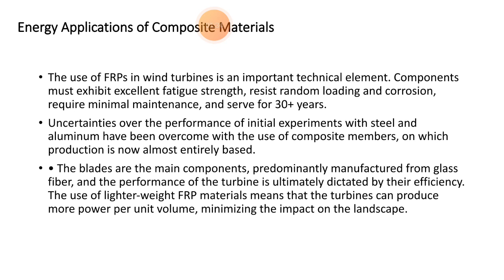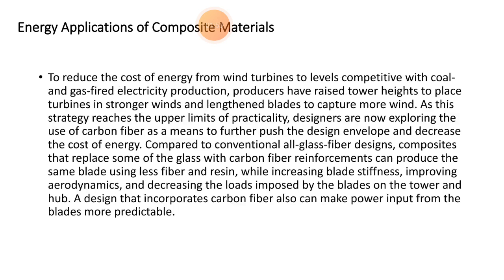Blades are predominantly manufactured from glass fibers, and the performance of the turbines is ultimately directed by efficiency. The use of lightweight FRP materials means that the turbines can produce more power per unit volume, minimizing the impact on the landscape. This also applies to eco-friendly prime movers.